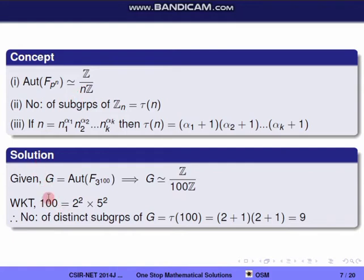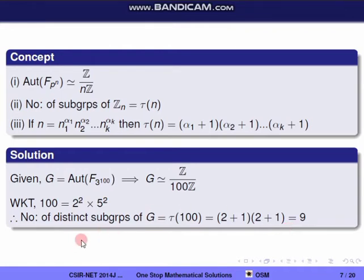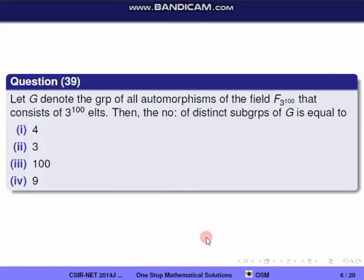Since G is the automorphism group of F_{3^{100}}, G is isomorphic to Z/100Z. Writing 100 = 2² × 5², the number of distinct subgroups equals τ(100) = (2+1)(2+1) = 3 × 3 = 9. The correct option is the fourth one.